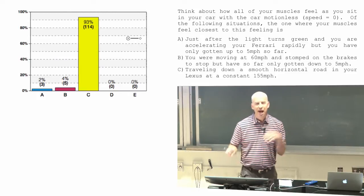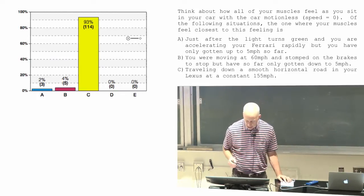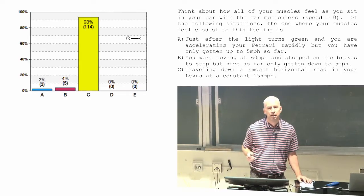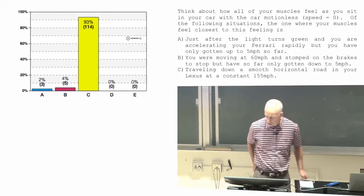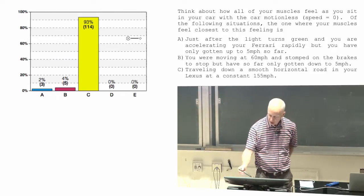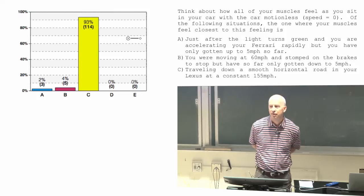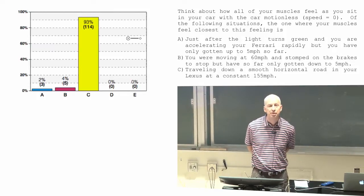So now we go back to physics. What is different about A and B? Or what's the same about the car sitting motionless and the car going 155 miles an hour? We go back to physics and we look at that momentum chart.